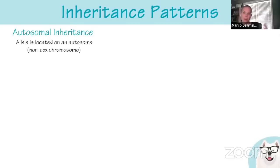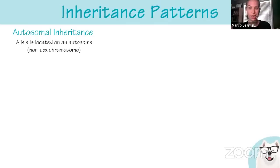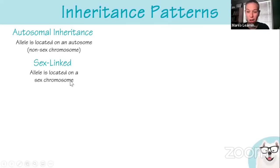Inheritance patterns can be autosomal or sex-linked. Autosomal means the allele is located on a regular non-sex chromosome. There are 22 pairs of autosomes and one pair of sex chromosomes, giving 46 total chromosomes. Sex-linked traits are located on a sex chromosome — traditionally on the X chromosome. Remember there's an X in sex. Y-linked traits exist but rarely appear on the AP exam; they'd appear straight down the board in males.